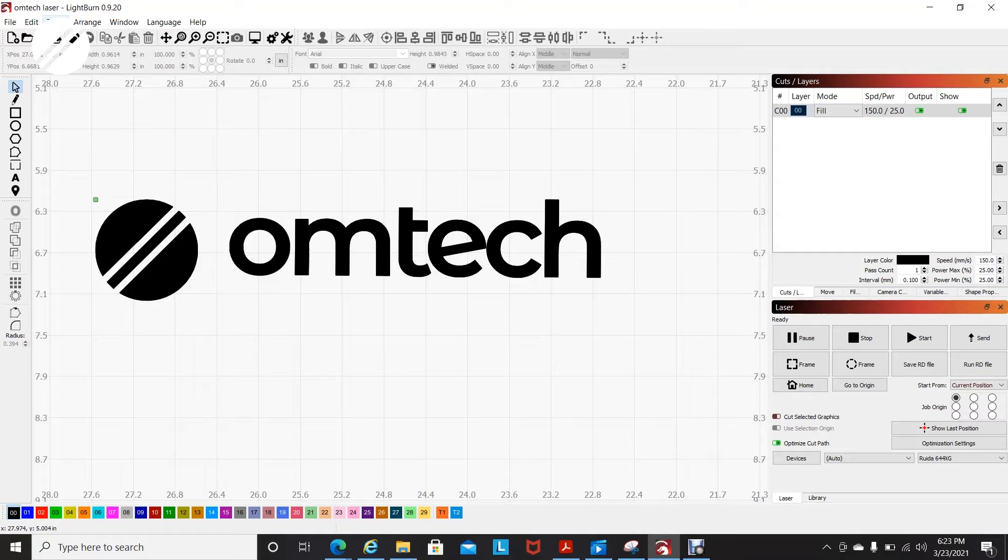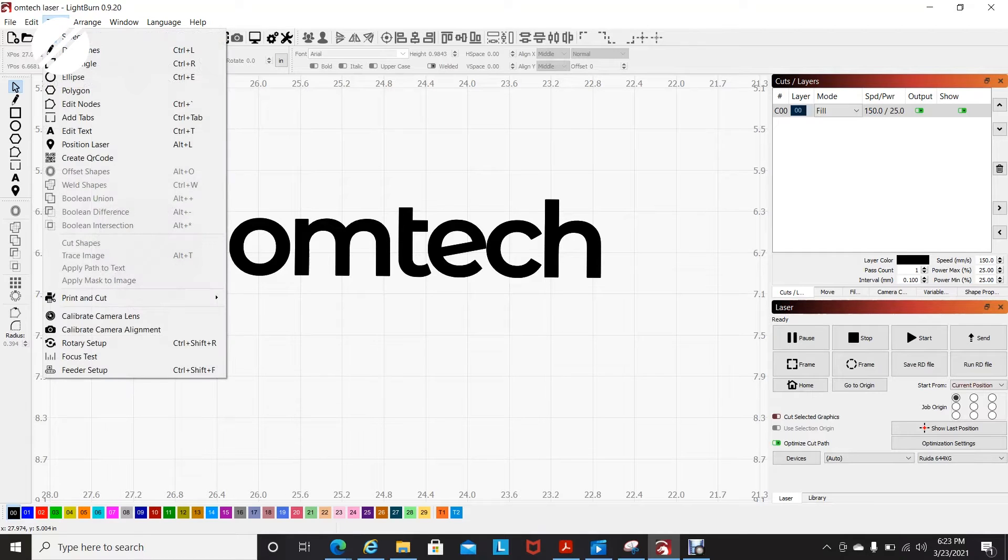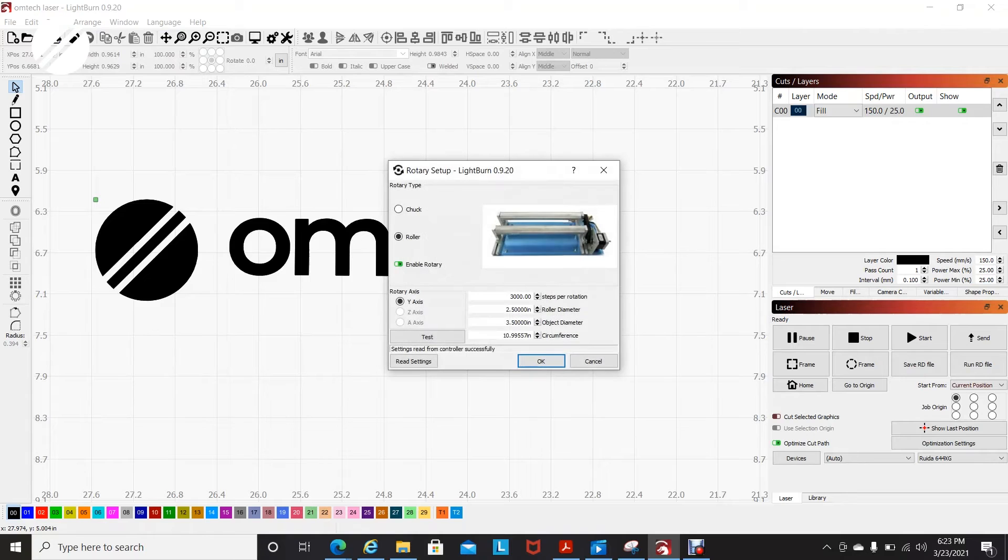In Lightburn, you would go to tools, then go to rotary setup, choose roller, and enable rotary device.